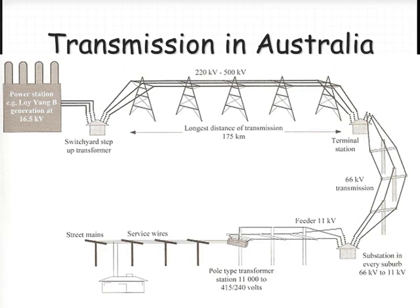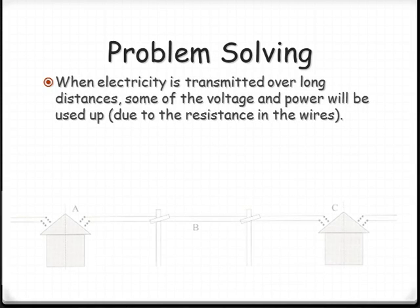So what are some of the problem-solving strategies that we can use when analyzing power transmission? Basically, when we transmit over long distance, we've got voltage and power that gets used up. Current never gets used up. The same number of electrons exist at the start as they do at the finish.